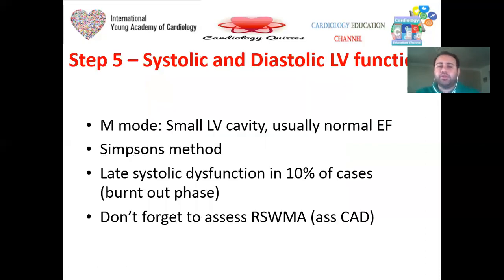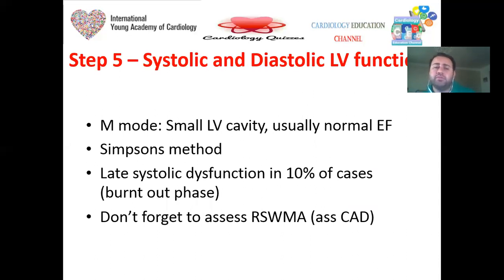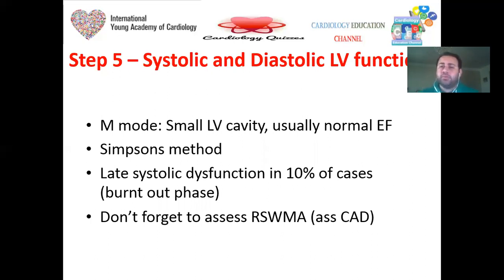Next is assessment of systolic and diastolic functions. The LV cavity is usually small in HCM due to marked myocardial hypertrophy, with usually normal ejection fraction. Simpson's method gives more accurate EF assessment. Don't forget that approximately 10 percent of cases develop late systolic dysfunction, known as the burnout phase. Also, don't forget to assess segmental wall motion abnormality, because HCM is associated with coronary artery disease — a patient may have significant hypokinesia in the anterior wall requiring intervention.